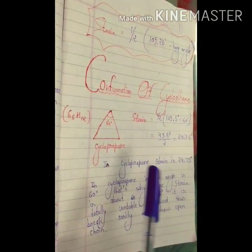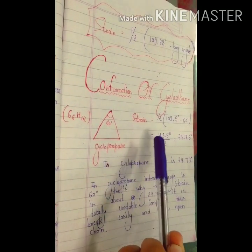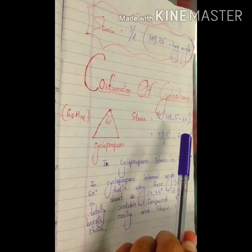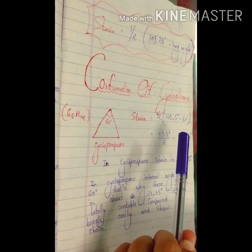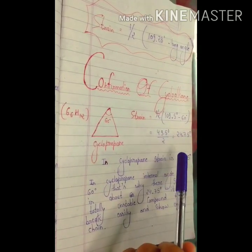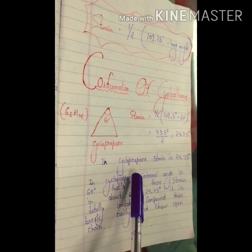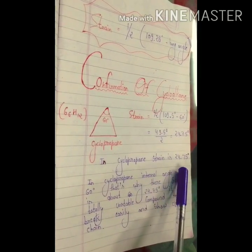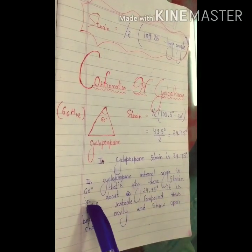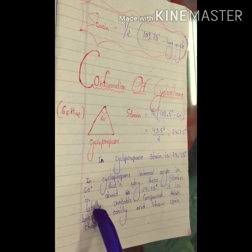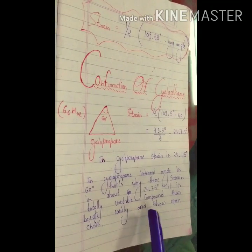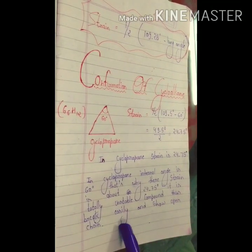This is cyclopropane. Strain is equal to half of (109.5 degrees minus bond angle), here which is 60 degrees, and the result is 24.75 degrees. In cyclopropane, strain is 24.75 degrees. The internal angle is 60 degrees, that's why its strain is about 24.75 degrees. It is a totally unstable compound and thus breaks easily to show open chain behavior.